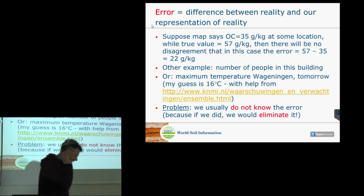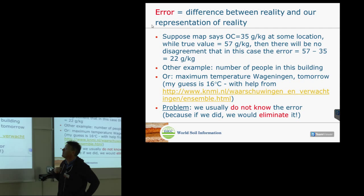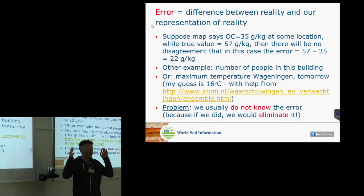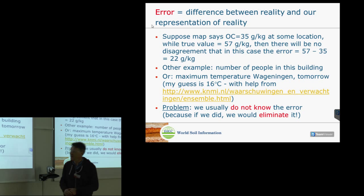So what is error, and what is uncertainty? A simple definition: error is the difference between reality and our representation of reality. We have an estimate or prediction, but that will deviate from the true value, and the difference between the truth and our representation is the error.